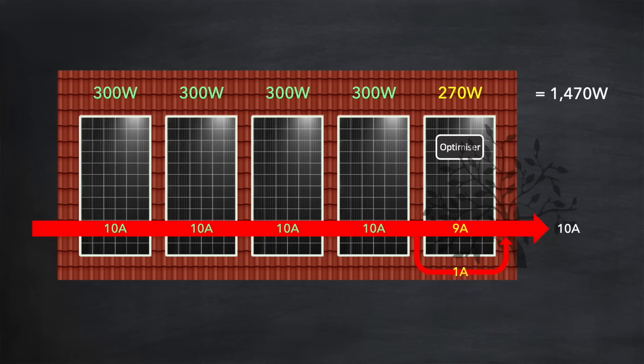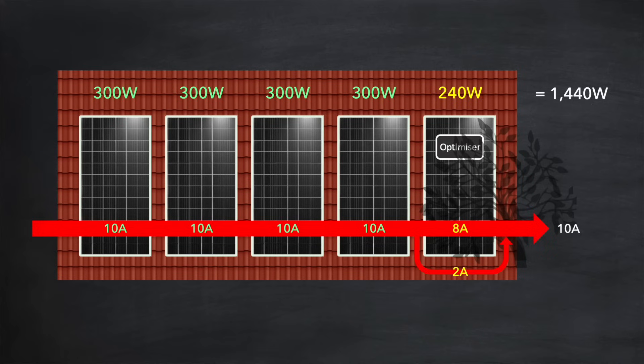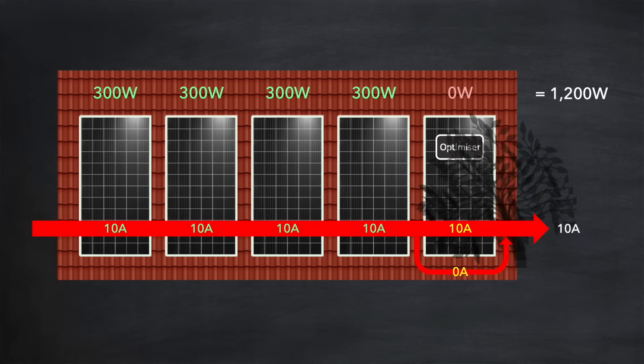We've seen the effects of 10% shading on one of your panels, both with and without optimizers. Let's increase that level of shading to 20%. As expected, the power output of the panel reduces, this time to 240 watts, because the increased level of shading only allows 8 amps of current to pass through. So the optimizer has to route 2 amps around the panel to preserve the power output of the other panels. Now let's increase the shading to 30%. The power output of the panel went to 0 watts, yet there is a full 10 amps of current flowing through the panel. What's going on?